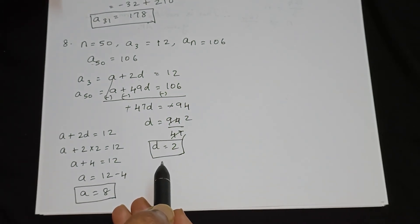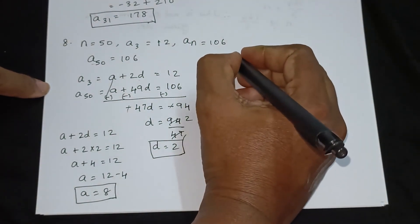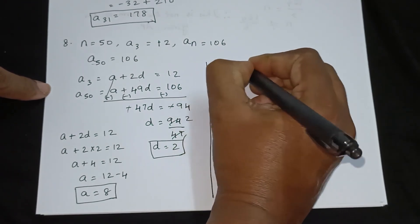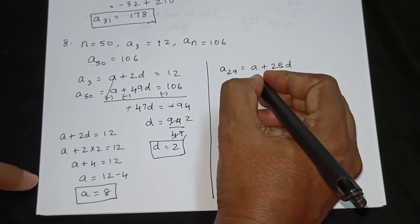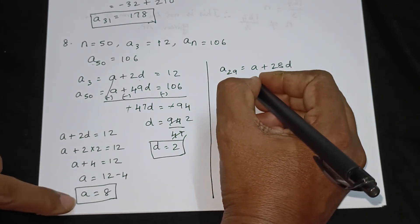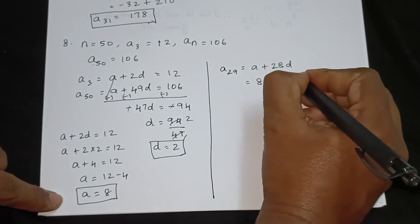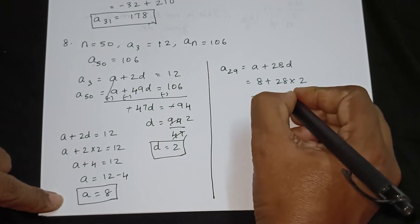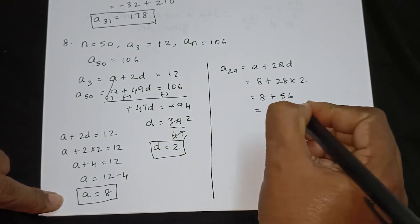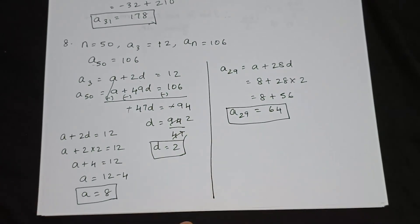Now, what are we going to find? The 29th term. The 29th term equals a plus 28d, which is 8 plus 28 into 2, equals 8 plus 56, equals 64. So a29 is equal to 64. That is the answer. Thank you.